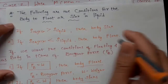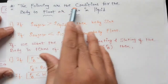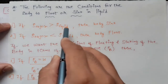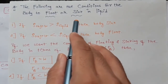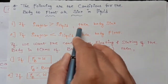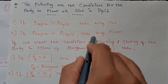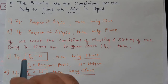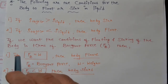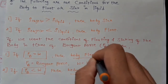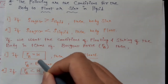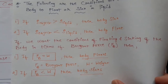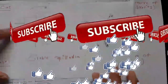Now, the conditions for a body to float or sink: if the density of the object is greater than the density of the liquid, the body sinks; if the density of the object is less than the density of the liquid, the body floats. In terms of buoyant force: if buoyant force equals the weight of the body, the body floats; if buoyant force is less than the weight, the body sinks. If you have any doubts, please ask in the comment section and please subscribe to my channel.